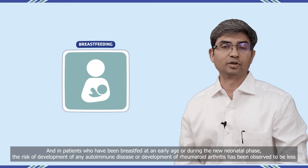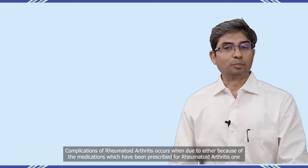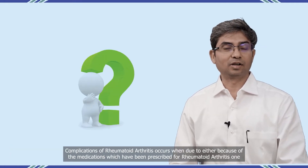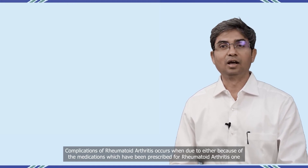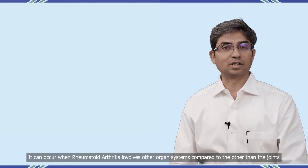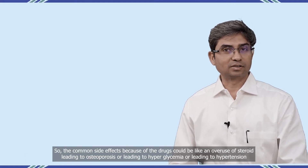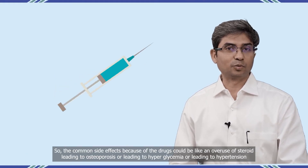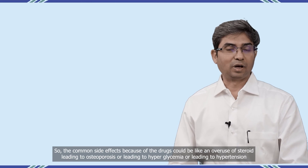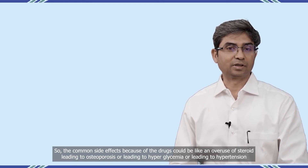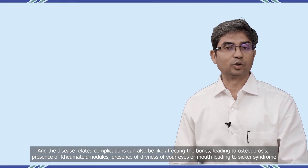The risk of development of any autoimmune disease or rheumatoid arthritis has been observed to be less in those who were breastfed. Complications of rheumatoid arthritis occur either because of the medications prescribed, or when rheumatoid arthritis involves other organ systems beyond the joints. Common side effects of drugs include overuse of steroids leading to osteoporosis, hyperglycemia, or hypertension. Disease-related complications can also include affecting the bones, leading to osteoporosis.